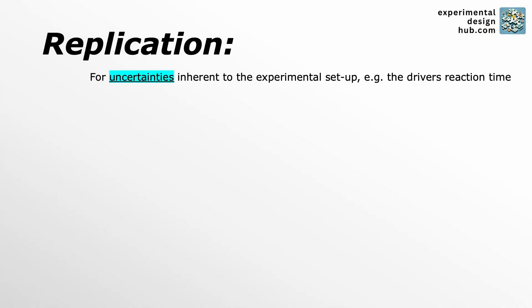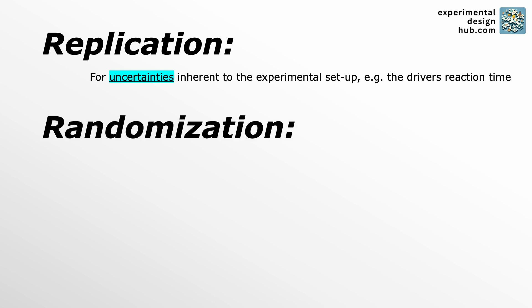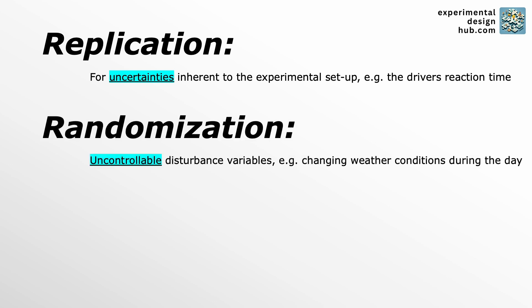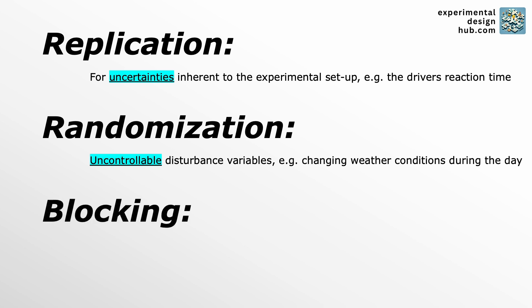Now to sum it all up: replication helps to deal with uncertainty like the driver's reaction time. Randomization helps to manage uncontrollable variables like weather changes during the day. And blocking is a way to control the variables which we know are going to affect the outcome but are not necessarily relevant for what we would like to test.